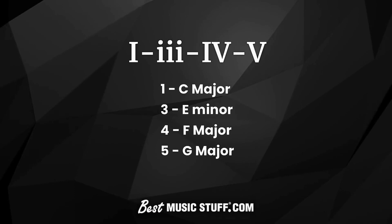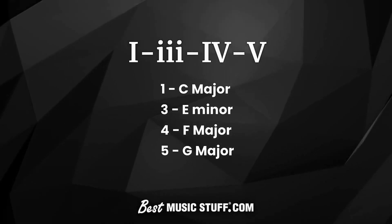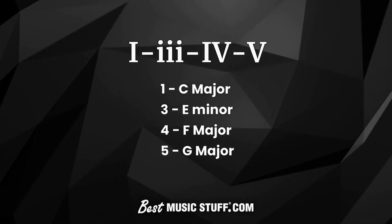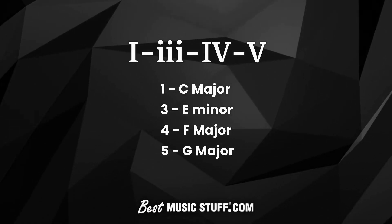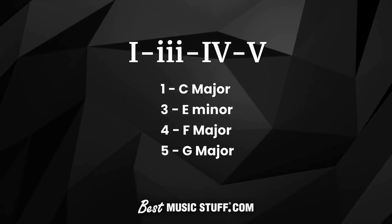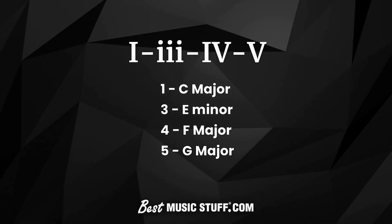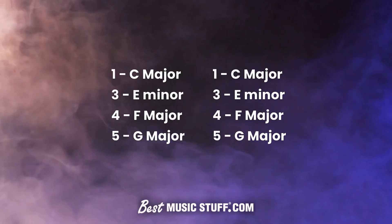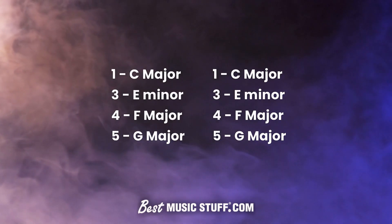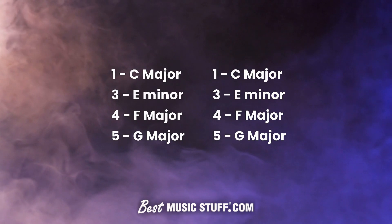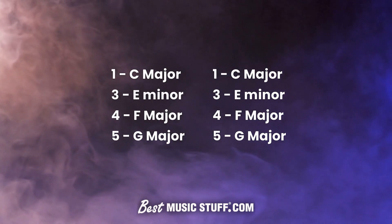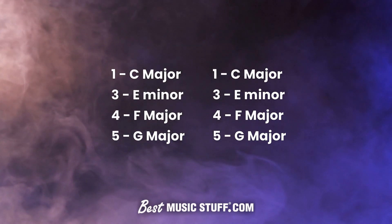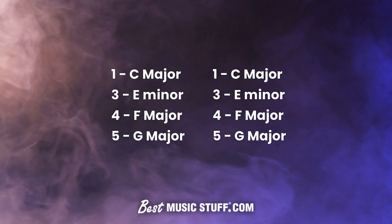The new dog song chorus we came up with also starts with the I chord, just like the verse, but will be followed by the III, IV, and V chord. In the key of C, this gives it a I, III, IV, V progression, which lasts for 8 bars, just like the verse.